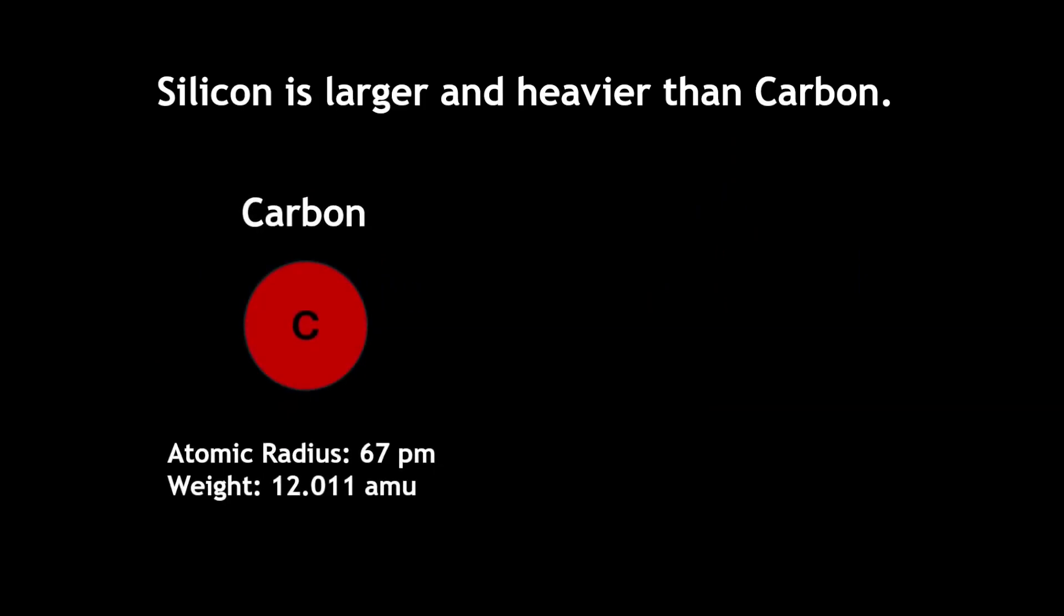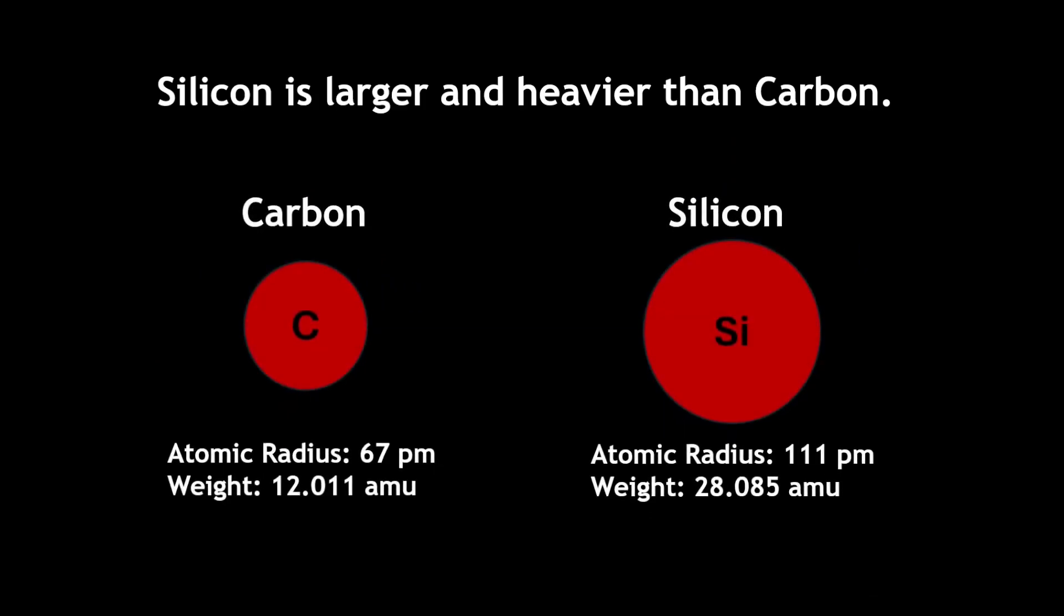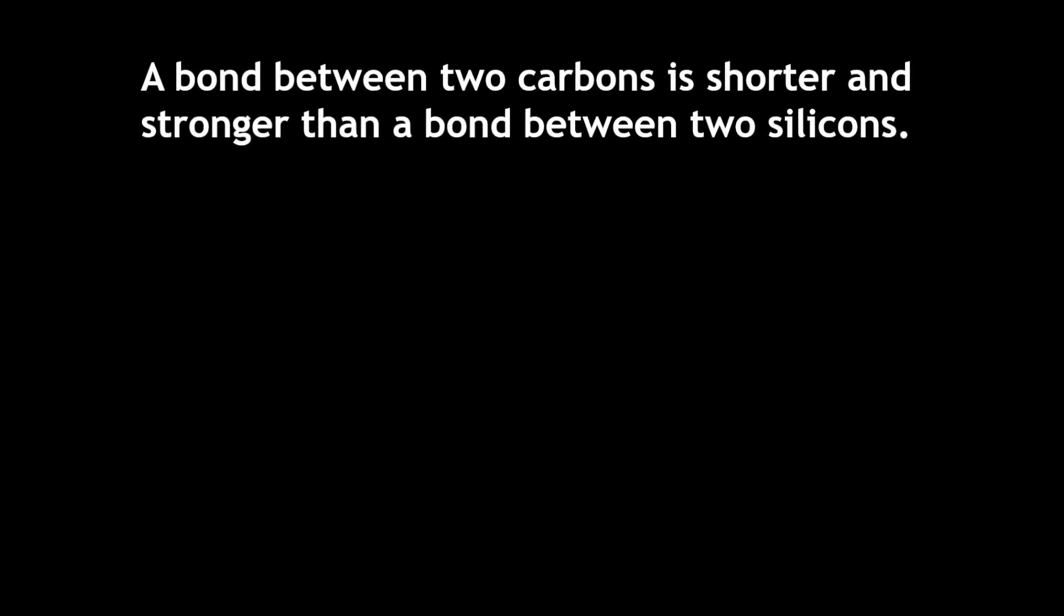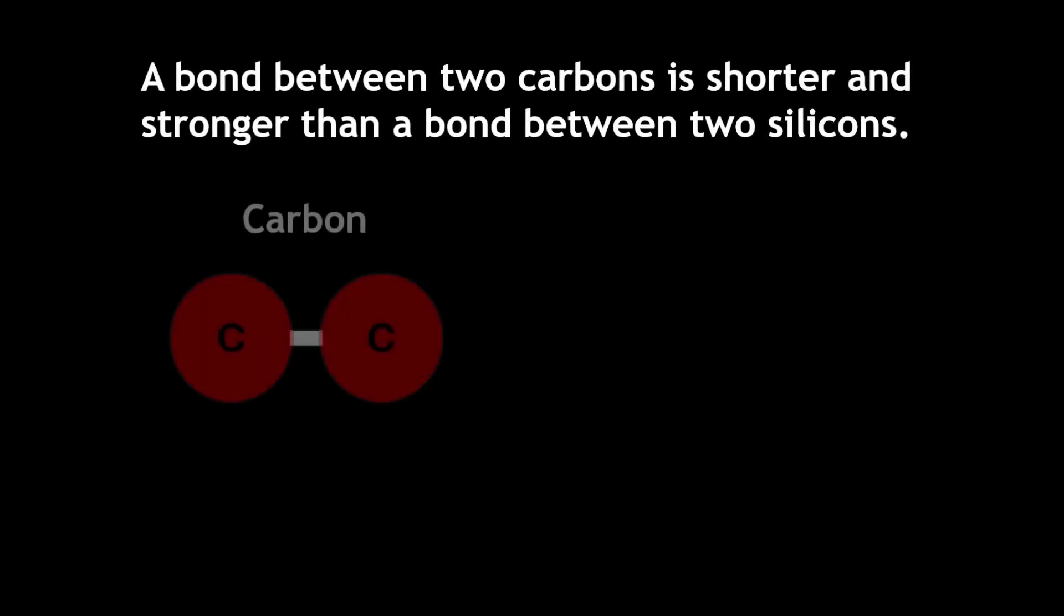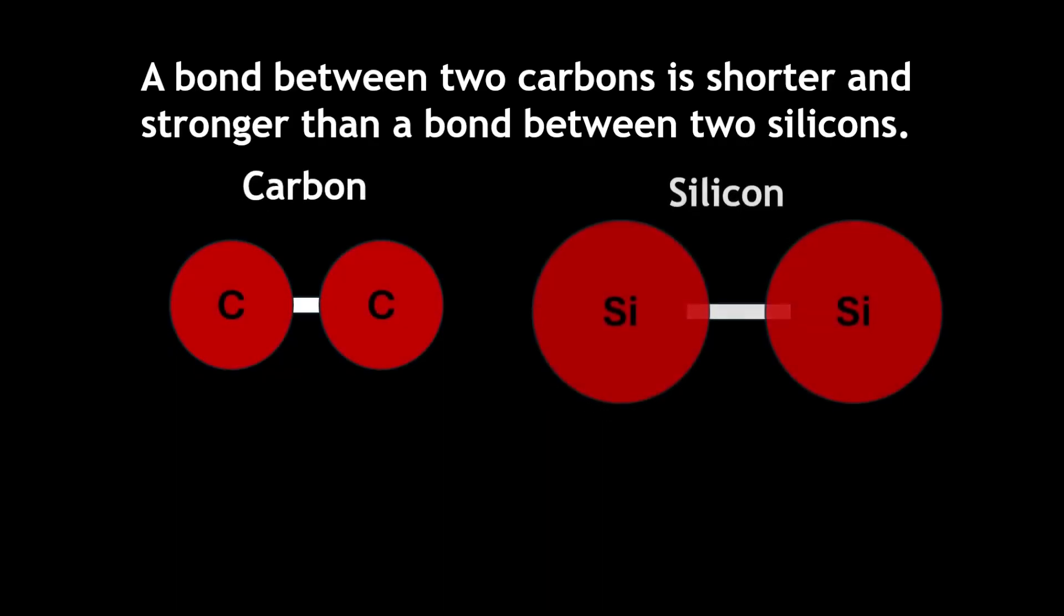However, silicon has an atomic radius that is approximately 66% larger than carbon, and silicon is approximately 233% heavier than carbon. Because of their difference in size, a carbon-carbon bond is far shorter than a silicon-silicon bond, meaning that a carbon-carbon bond is far stronger than a silicon-silicon bond.